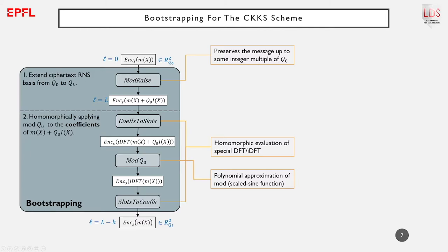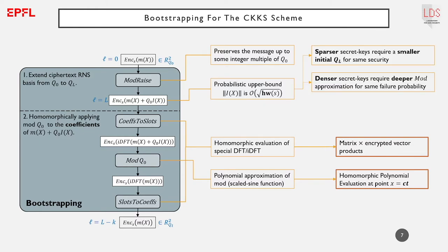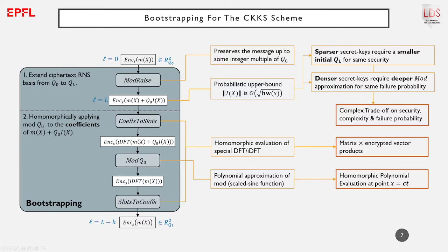The core functionalities of bootstrapping are the special DFT transforms — expressed as homomorphic matrix-vector products — and the modular reduction, expressed as a homomorphic polynomial evaluation at point x equals ciphertext. The whole procedure is very sensitive to the density of the secret key, because the coefficients of i are upper bounded by the square root of the Hamming weight of s. Sparser secret keys require a smaller initial modulus q_L for the same security, implying fewer homomorphic operations, while denser keys require a larger approximation range for the mod q_0 function, costing CPU time and more levels.